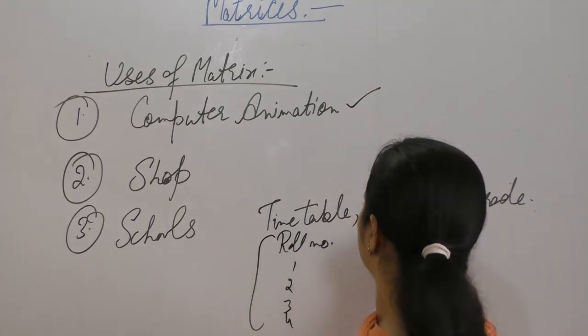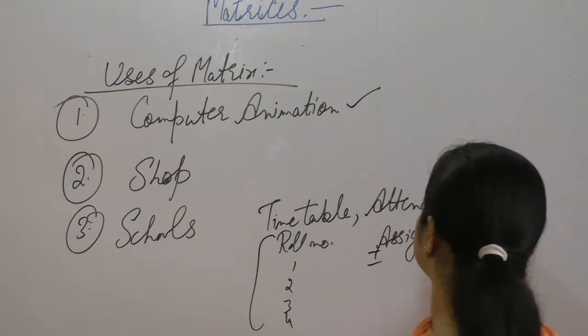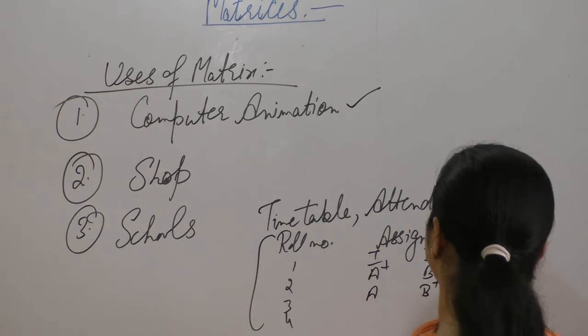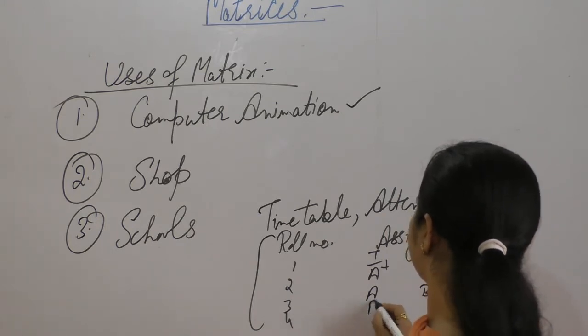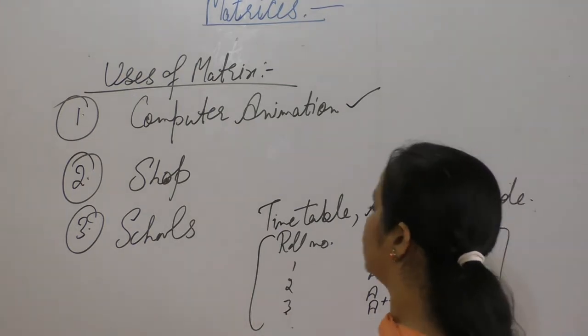Suppose these are the number of students: 1, 2, 3, 4 and assignments 1, 2, 3 and grade A plus, B, C, A, B plus, C plus, A plus plus, B, A, B plus and so on.